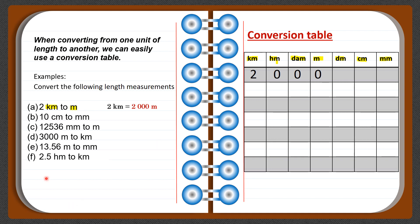In the next example, we are still converting from a larger unit to a smaller unit. Centimeters are to the left of millimeters, meaning centimeters are larger than millimeters. Here we have a two-digit number, whereas in the first example we had only one digit.